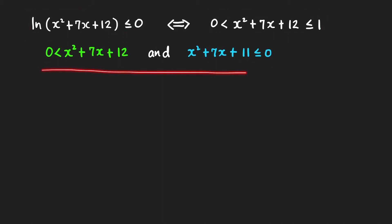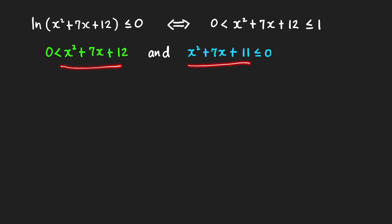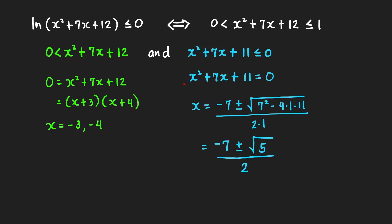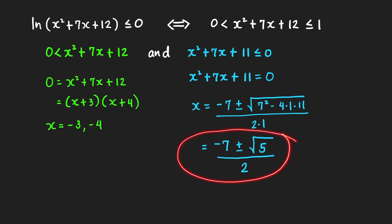We can solve these inequalities using a sign chart. First we find the x values where each expression equals 0. The first expression is factorable as (x plus 3)(x plus 4), giving zeros at x equals negative 3 and x equals negative 4. The second expression is not factorable, so we use the quadratic formula to get x equal to negative 7 plus or minus the square root of 5, all over 2.